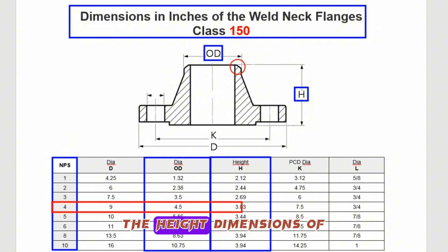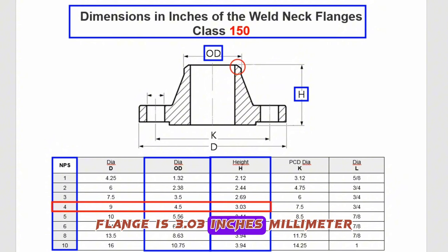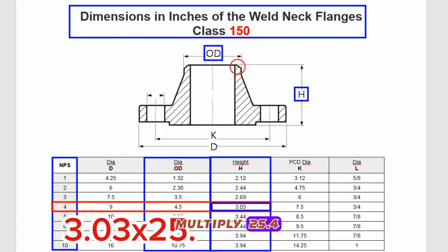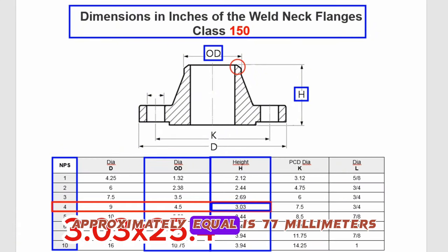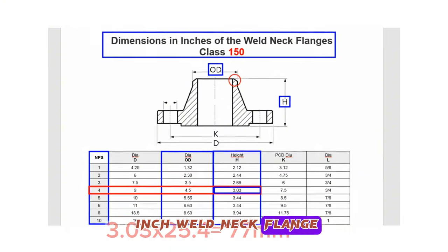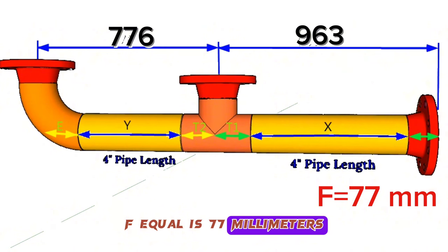The height dimension of the 4-inch weld neck flange is 3.03 inches. The millimeter equivalent is 3.03 multiplied by 25.4, which approximately equals 77 millimeters. We have found the length of the 4-inch weld neck flange: F equals 77 millimeters.